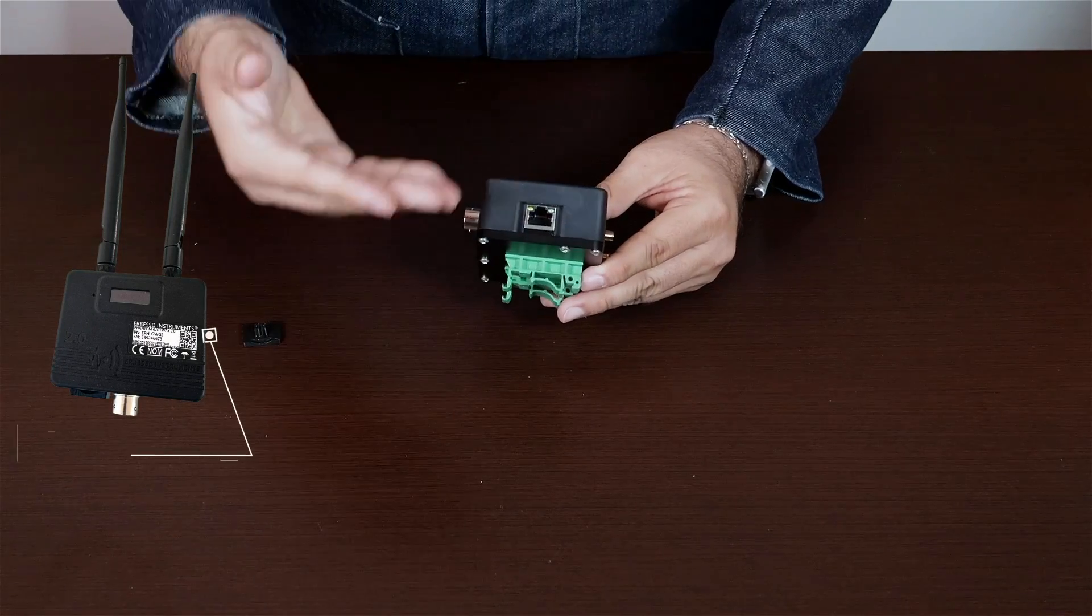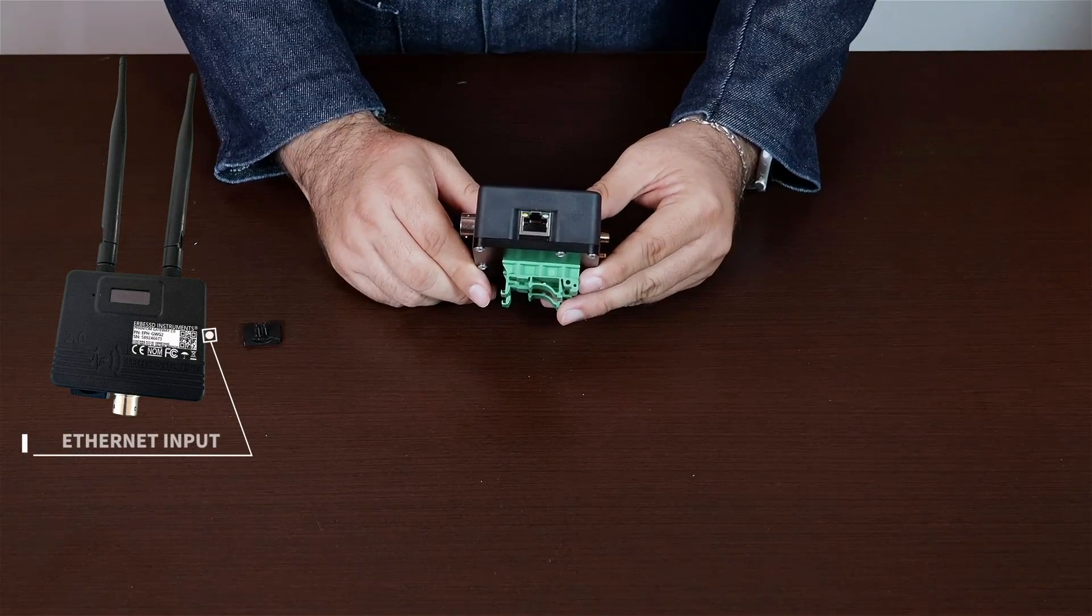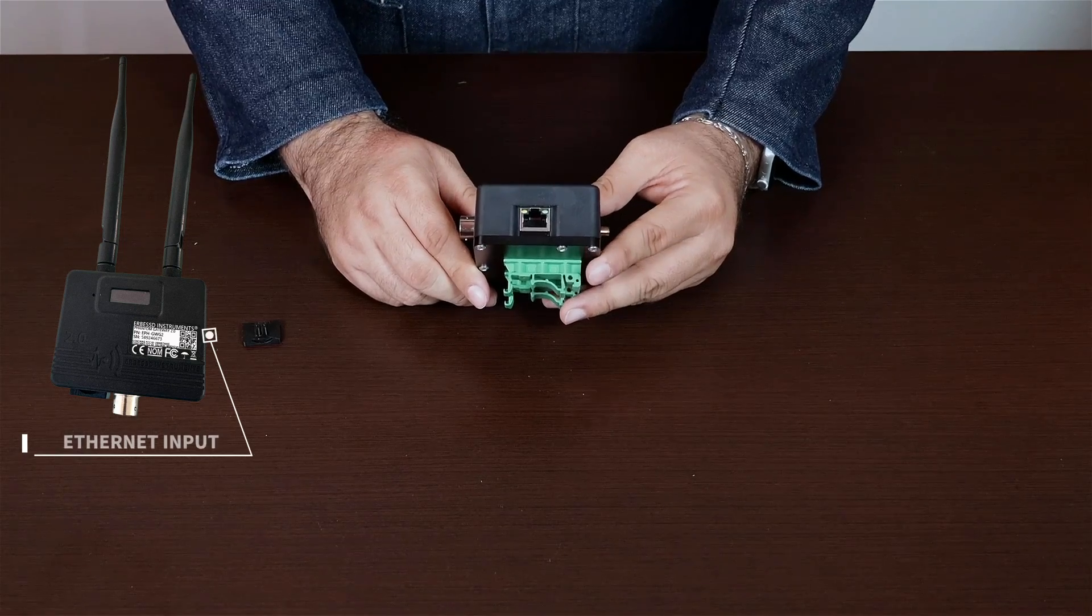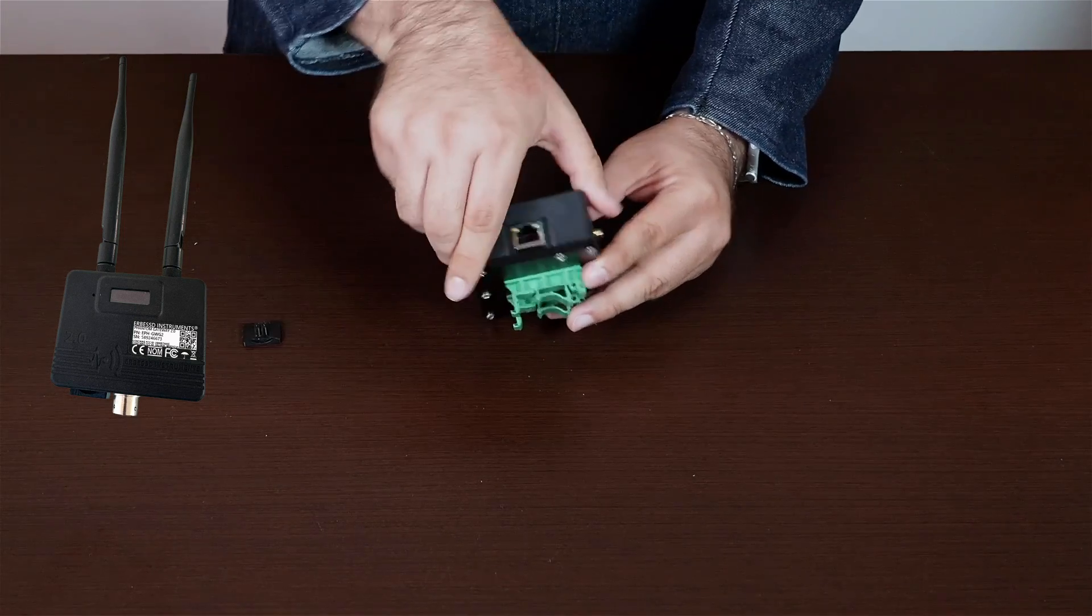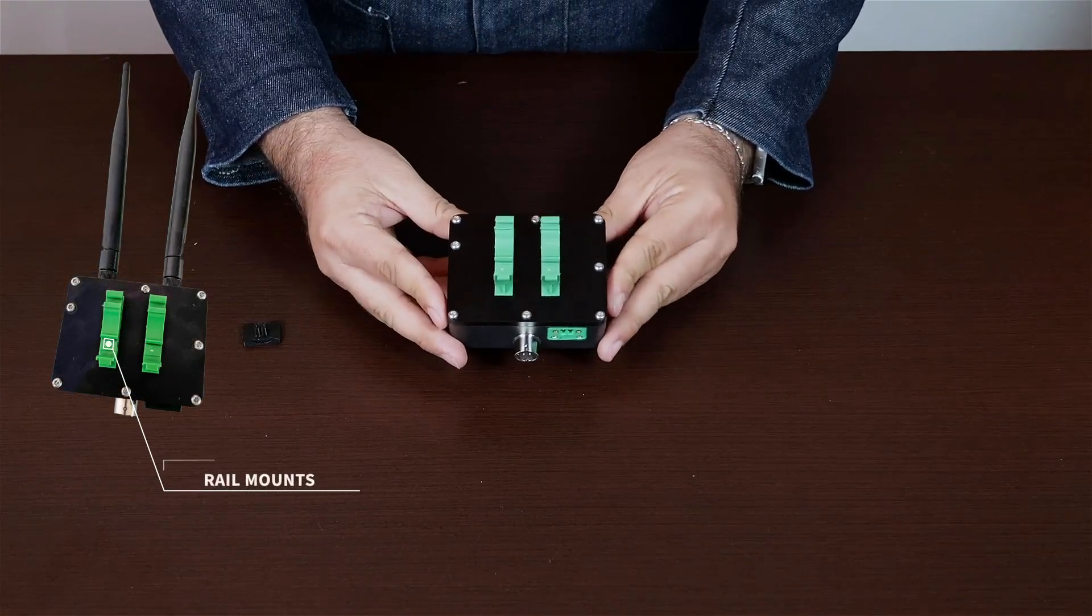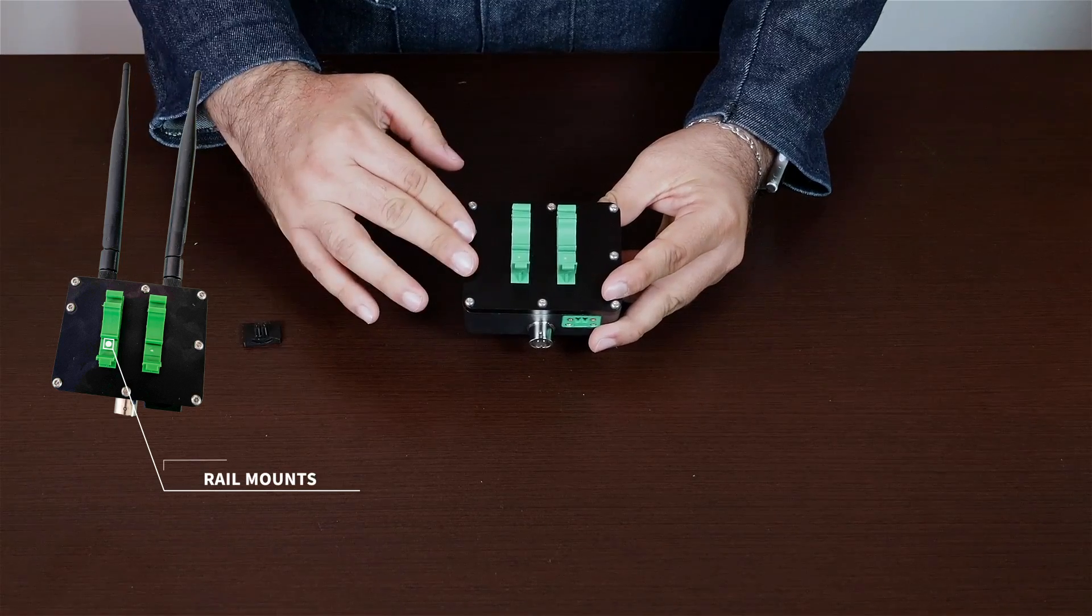Also, on the right side, there is an Ethernet input for connecting the sensor to a wired network via Ethernet. On the back of the gateway, there are rail mounts for easy installations in any area of your industry.